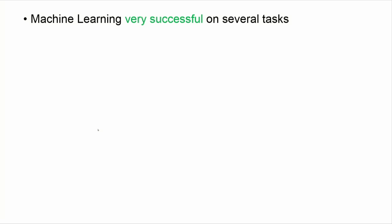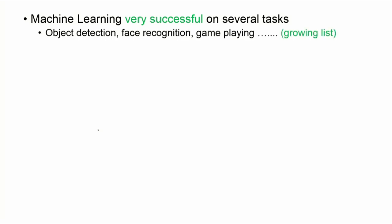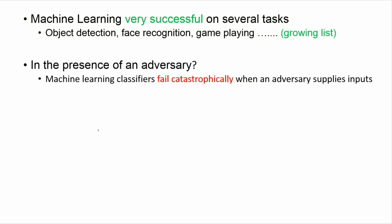Machine learning, as we all know, is successful on several tasks. But as we try to use machine learning in the real world and deploy it in different environments, how does machine learning hold up in an adverse environment? Unfortunately, a lot of recent work has shown that machine learning classifiers fail catastrophically when an adversary comes into the picture, and the classifiers perform really badly.